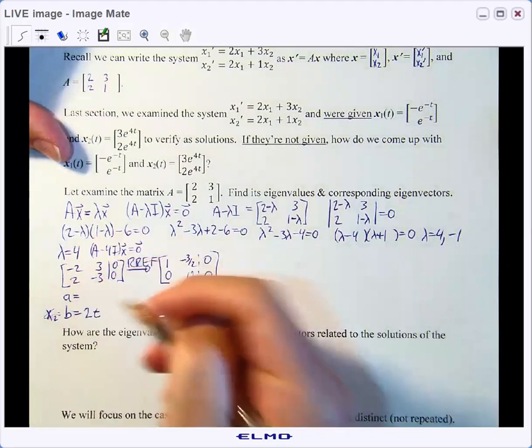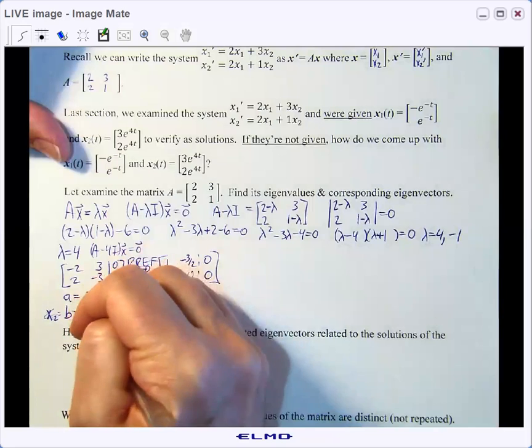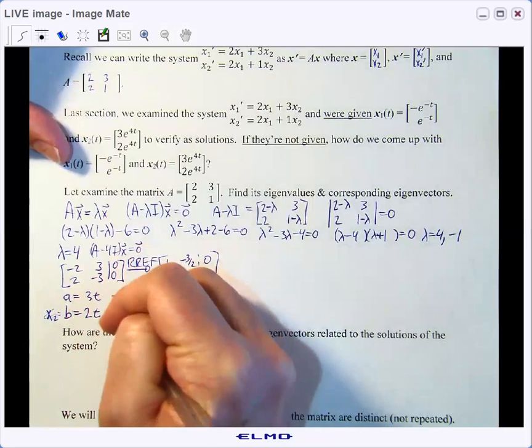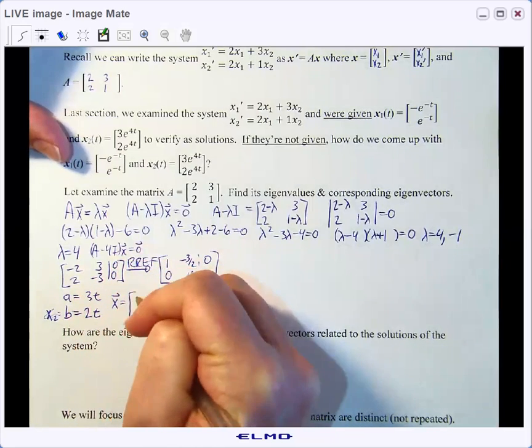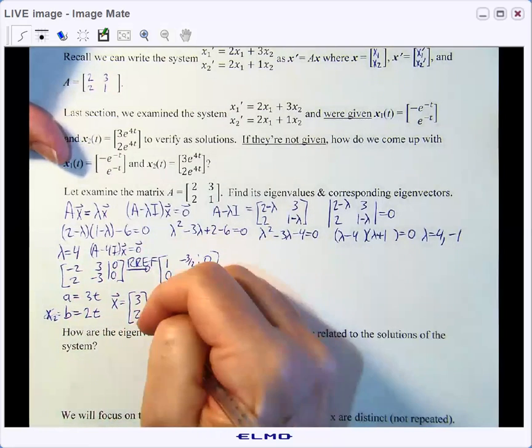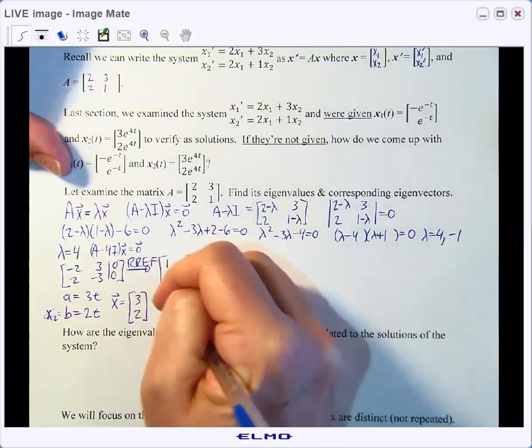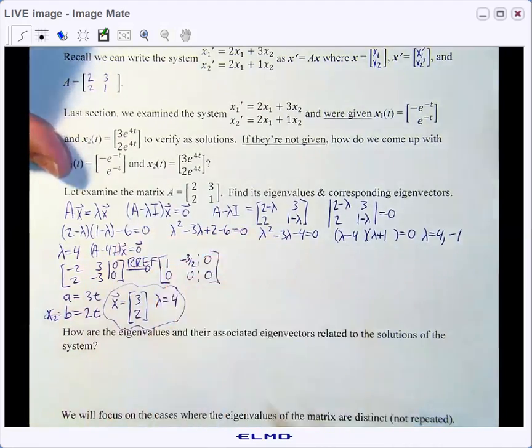And then a will be, when I solve this guy, he'll be 3t. So our eigenvector here is 3, 2. And that corresponded with the eigenvalue of 4.